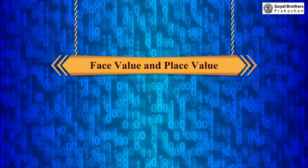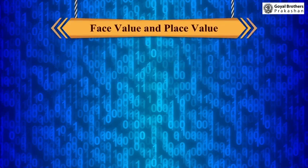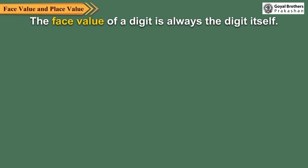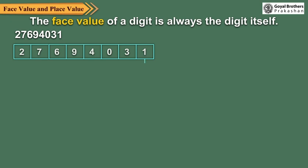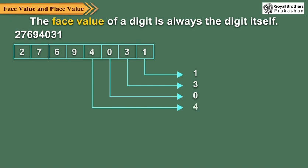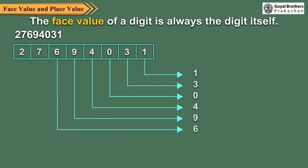Face value and place value. The face value of a digit is always the digit itself. For example, in the number 2,76,94,031, the face value of 1 is 1, 3 is 3, 0 is 0, 4 is 4, 9 is 9, 6 is 6, 7 is 7, and 2 is 2.